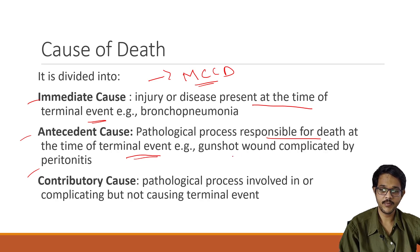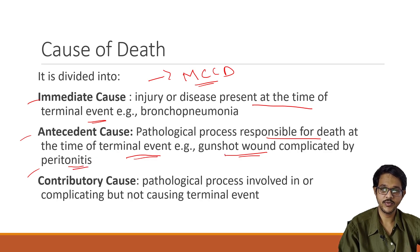For example, a person has been wounded by a gunshot which may lead to peritonitis, and the person died because of septicemia. Here the process is: gunshot wound leading to peritonitis leading to death. So the immediate cause is septicemia, but the antecedent cause is peritonitis caused by the gunshot wound.